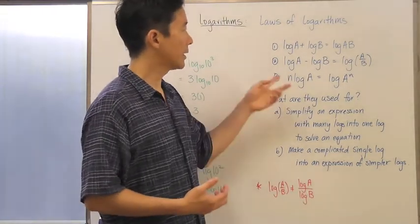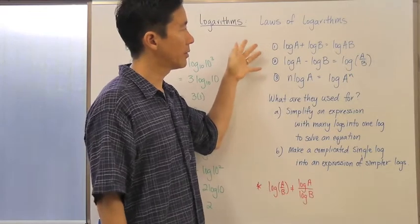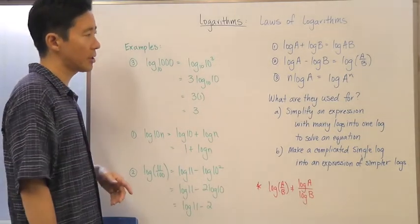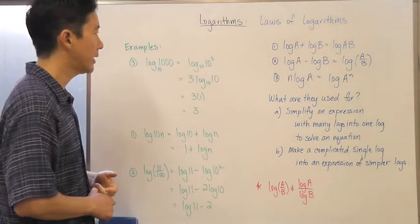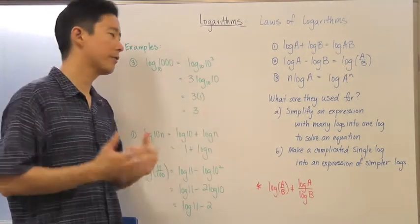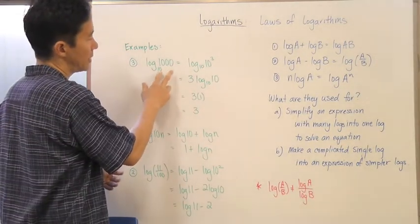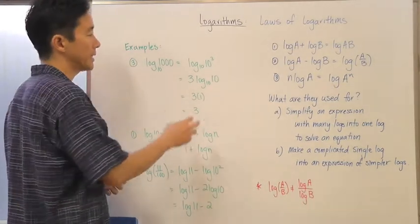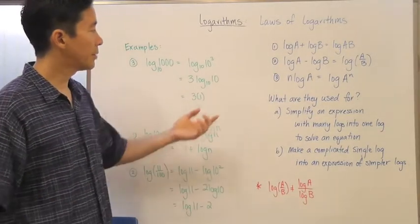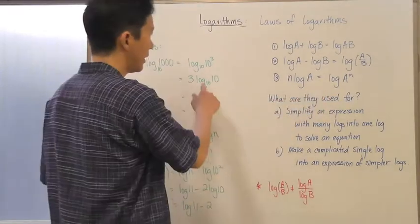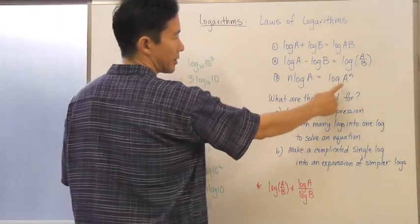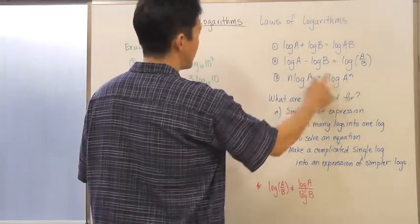Let's take a look at some examples of these laws in action. I'm going to start with law three first. If we have log base 10 of 1000, notice that's the same as log base 10 of 10 to the third. Using the power property, this form is exactly the same as that form — so log base 10 of 10 to the third means a is 10 and n is 3.